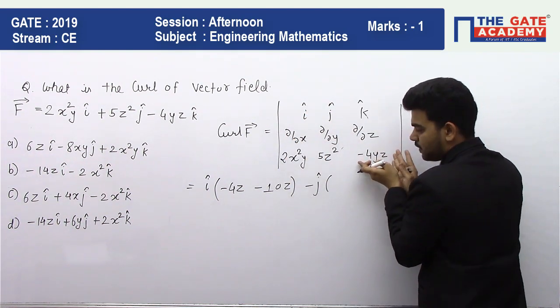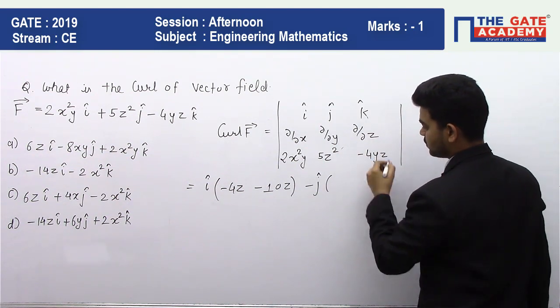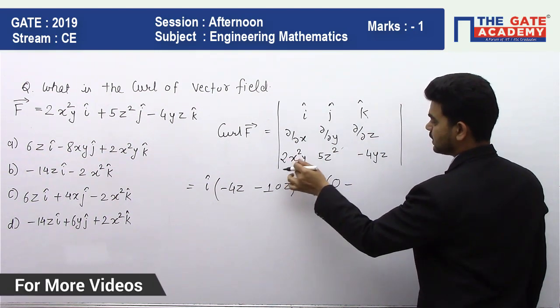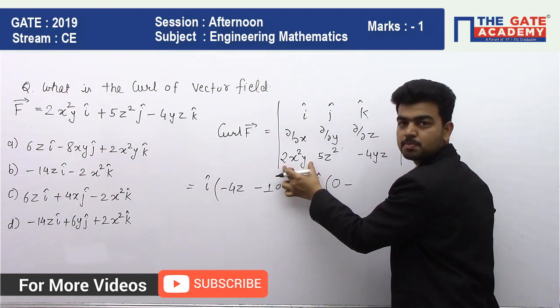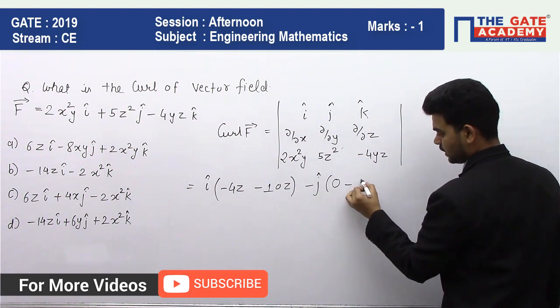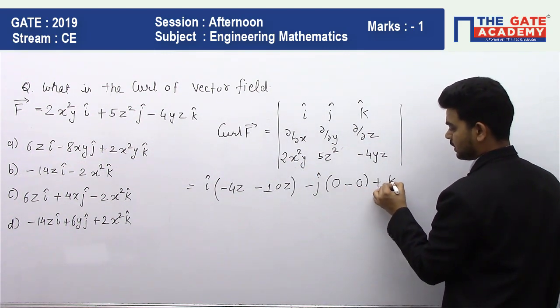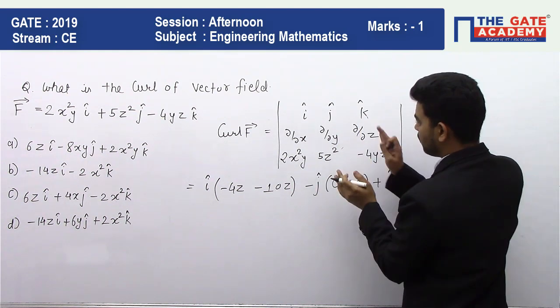It will be zero minus, again we will differentiate this function with respect to z, we will get zero plus k. Now we will remove this and this, we will see only these four elements.